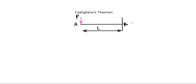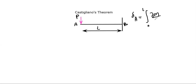Yesterday we used the expression for finding the deflection. The deflection at point A was coming out equal to the integral from 0 to L of (del M / del P) multiplied by (M / EI) dx. This was the expression we were using yesterday.